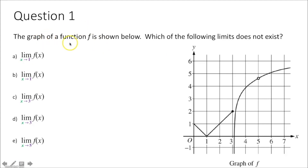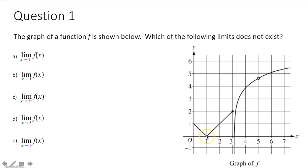First question says the graph of the function f is shown below. Which of the following limits does not exist? We have the limit as x approaches 1 from the left of f of x. Looking at the function, as x approaches 1 from the left, the y value goes to 0. Therefore, the limit as x approaches 1 from the left of f of x equals 0.